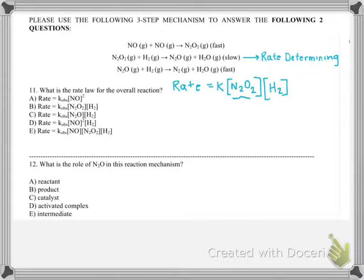We'll have rate is equal to K times N2O2 times H2. Okay, so that seems fine, but we can't leave this intermediate in our rate law. We want to write it in terms of things that are actually in our reaction. And this doesn't show up in the overall reaction, so we don't want to include it.